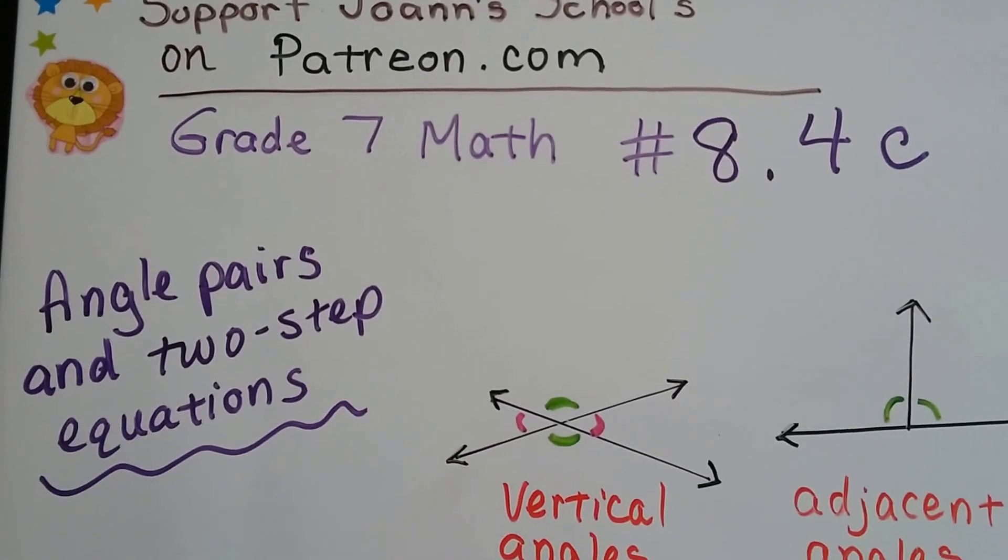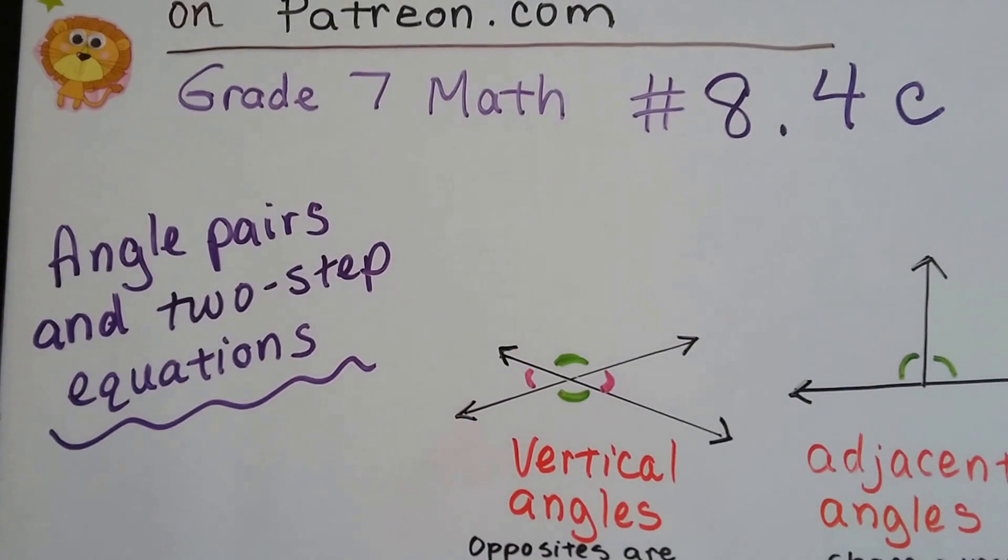Grade 7 math number 8.4c, Angle Pairs and Two-Step Equations.